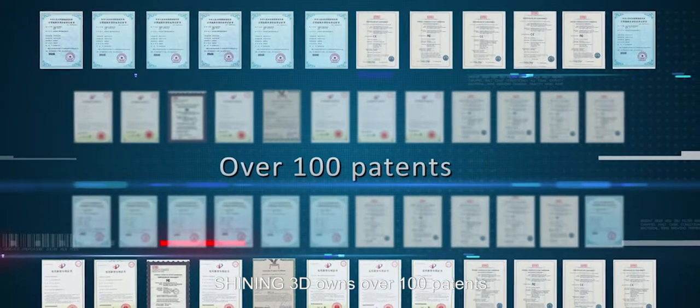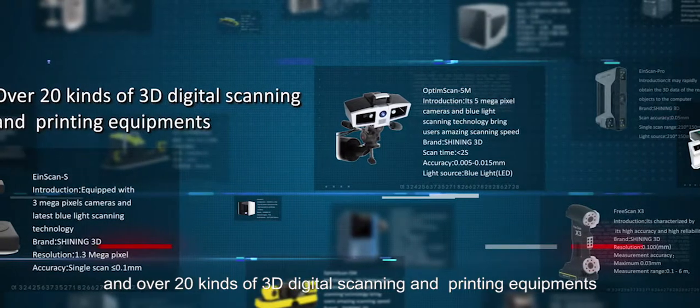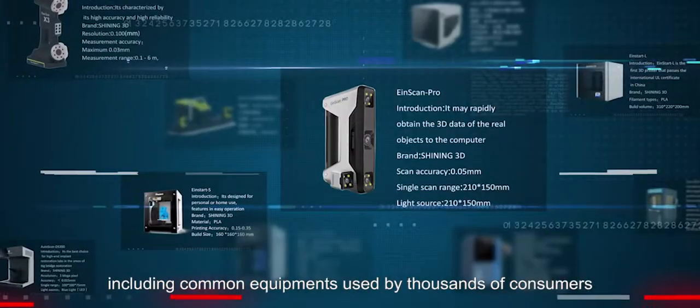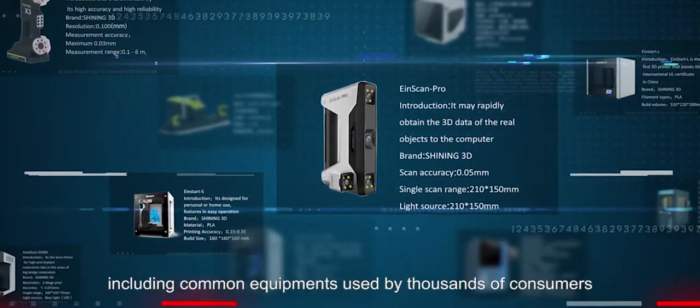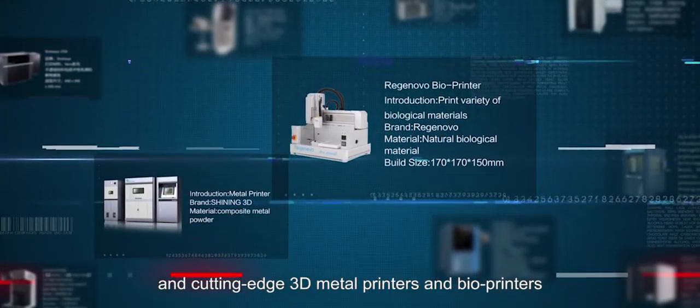Shining3D owns over 100 patents and over 20 kinds of 3D digital scanning and printing equipment, including common equipment used by thousands of consumers and cutting-edge 3D metal printers and bioprinters.